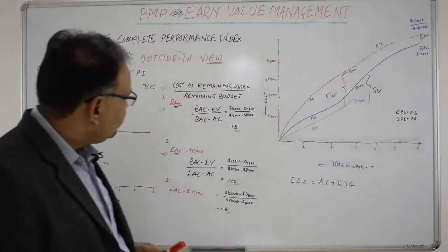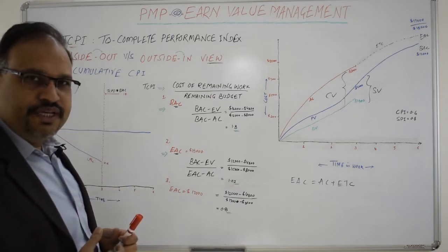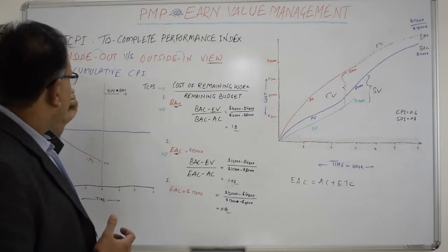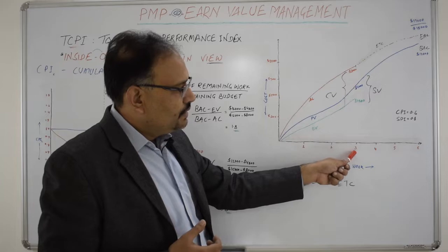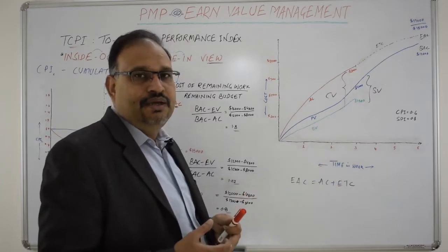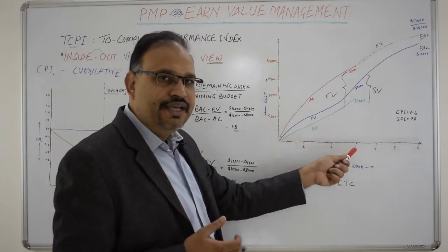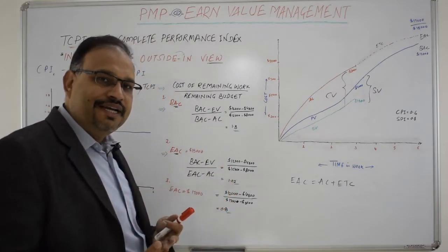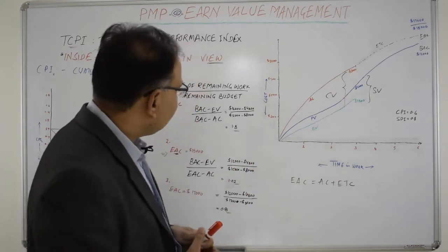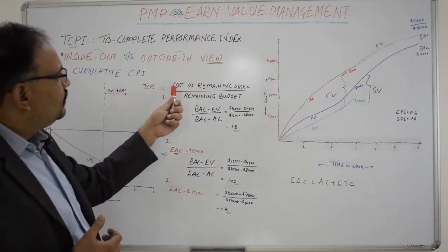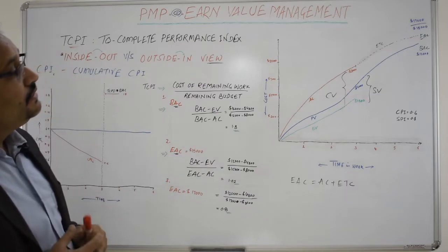Another term to understand here is CPI-C — the Cumulative CPI. In this example, CPI was calculated at the end of week three, but we could have calculated it at the end of week one, week two, and then week three. The CPI calculated at the end of week three would be the cumulative CPI. The formula for TCPI is: cost of remaining work divided by remaining budget.